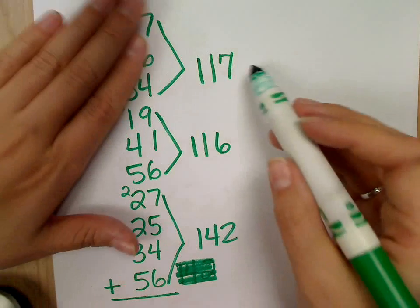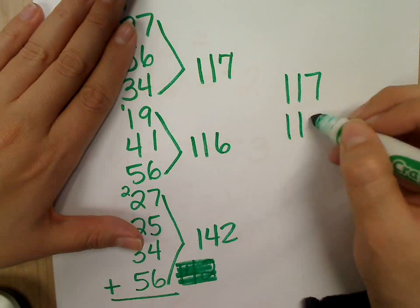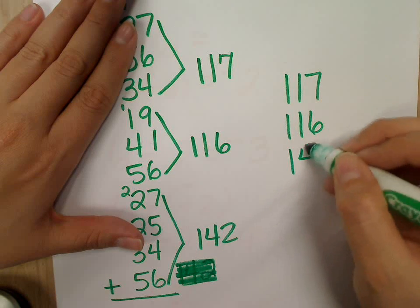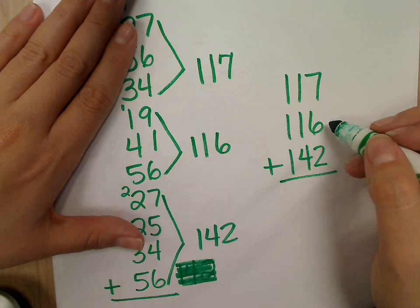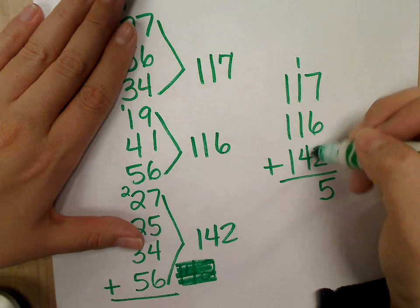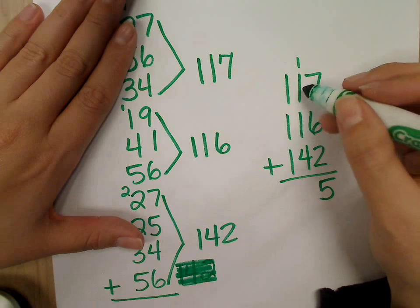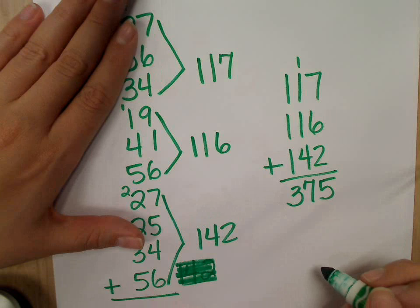Now, what do I do with these three numbers? Add them up. And I want to rewrite them so that I make sure I add it correctly. Seven and six? Thirteen. Thirteen plus two? Fifteen. Carry the one. Four and one? Seven. Five, six, seven. Three, seven, and three hundred and seventy-five. Good. Three hundred and seventy-five.